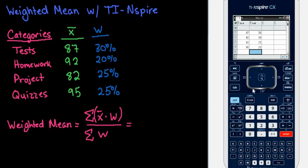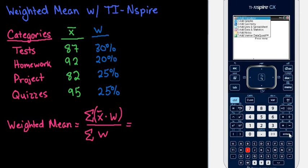After you have the data entered in, I like to do all of my calculations on a calculator screen. So I'm just going to Ctrl-I and add a calculator. And for this one, what we are going to do is we're going to go to menu, and then we're going to go to the statistics screen.